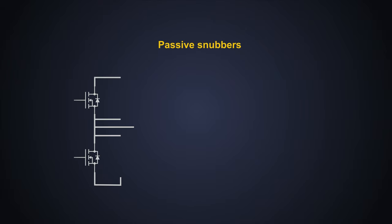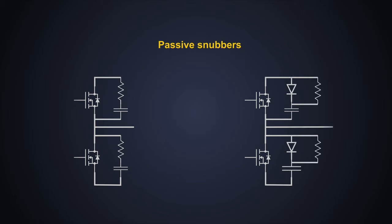The passive snubber circuits consist of capacitors and resistors and in some cases, diodes are also used. These are connected to the switching element. However, this technique of soft switching is inefficient and control over soft switching is very limited. We will see about the snubber circuits in future videos.